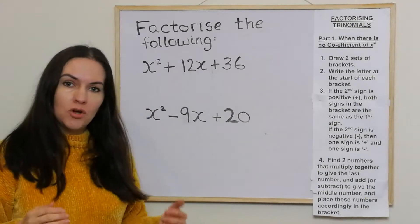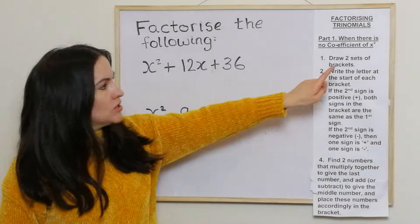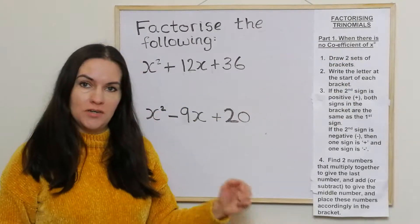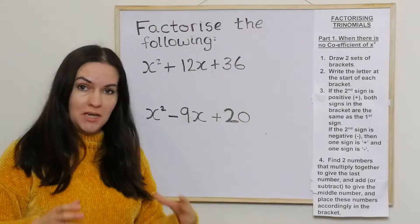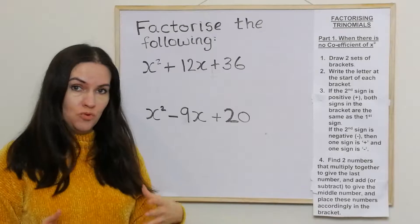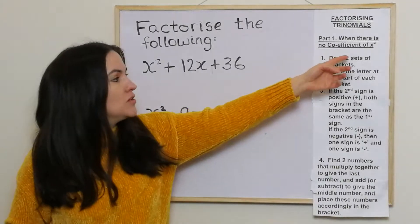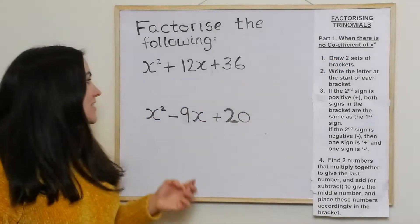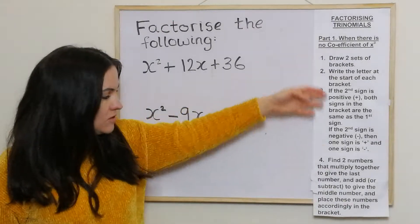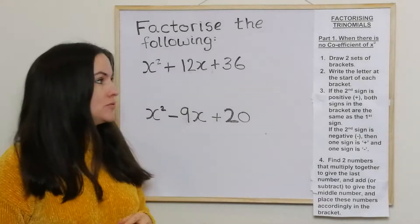We're calling this part one because we're only looking at ones where there's no coefficient of x squared. This is possibly a bit easier, but we'll start with this and then in the other videos we'll move on. I'm going to go through two examples using four steps and then go through some other examples.